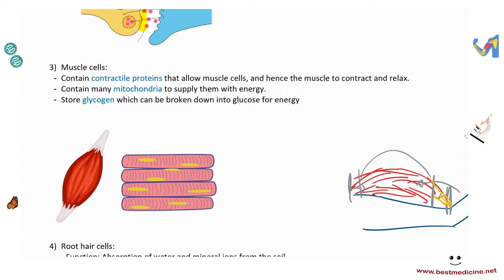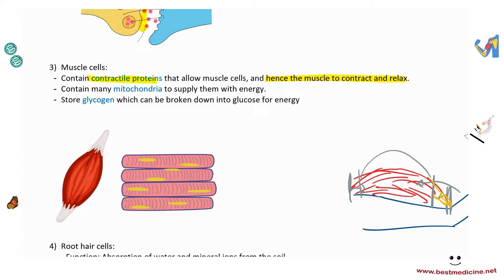Muscle cells contain contractile proteins that allow them to contract and relax. They also contain many mitochondria to supply the energy needed for contraction, and they store glycogen — which can be broken down into glucose — to fuel those contractions. A lot of energy is required for muscle contraction, hence the high number of mitochondria.